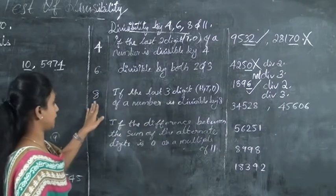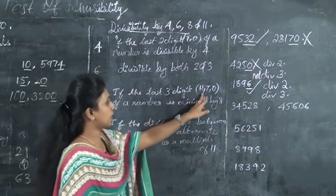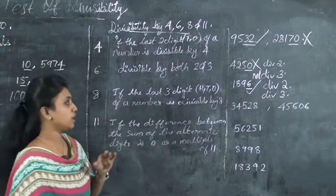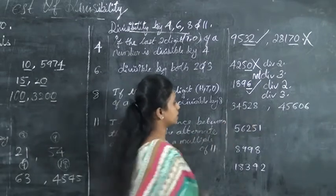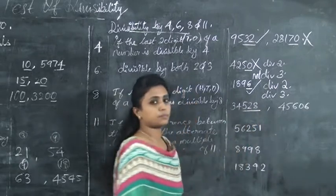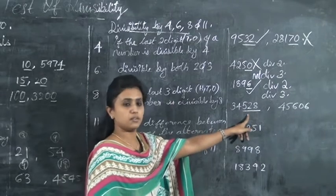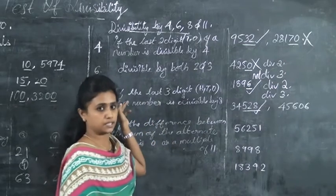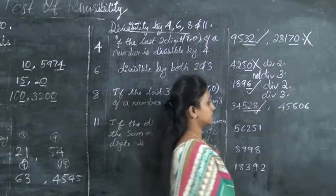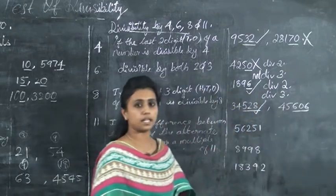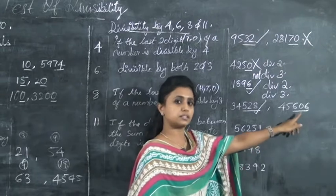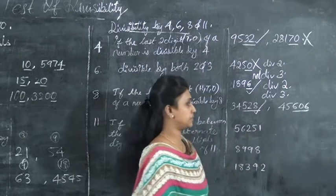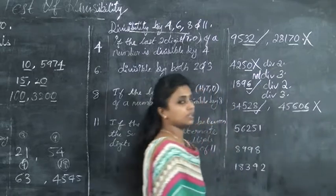Now the next one is 8. A number is divisible by 8 if the last three digits — hundreds, tens, and ones — are divisible by 8. For example, 34,528: the last three digits are 528, which is divisible by 8, so 34,528 is divisible by 8. Next, 45,606: the last three digits are 606, which is not divisible by 8, so 45,606 is not divisible by 8.